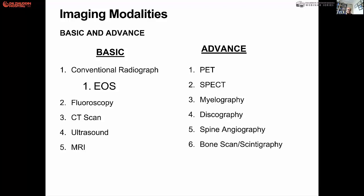There's something called EOS — a low-dose radiographic technique. We also require fluoroscopy, CT, ultrasound, and MRI, which are now available in every country. Advanced investigations include myelography, discography, spine angiography, bone scan, and scintigraphy.